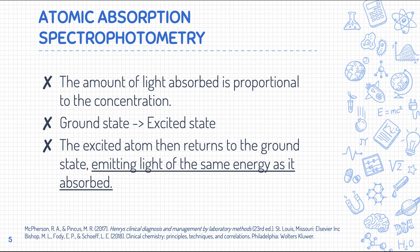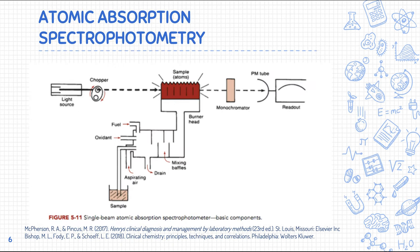To recap: in AAS, our atoms are on their ground state. We expose them to energy to excite them, and from the excited state they return to their ground state, emitting light. The basic components of the AAS instrument are: the light source, the chopper, the nebulizer, the atomizer, the monochromator, the photo detector, and the readout device.